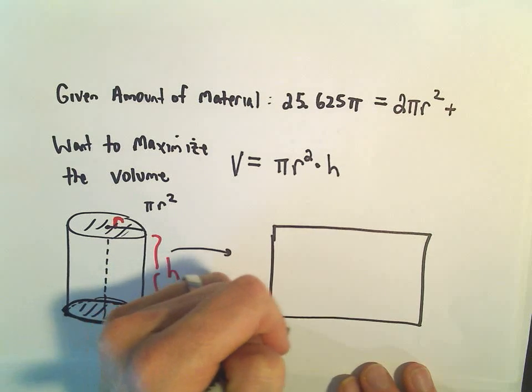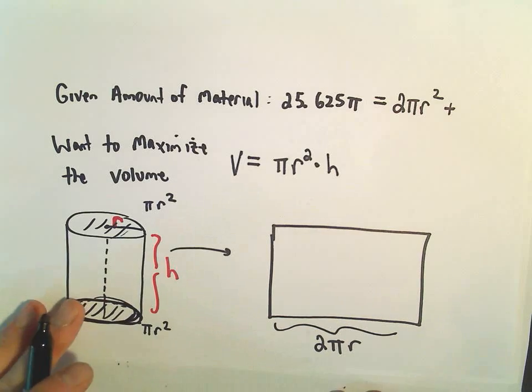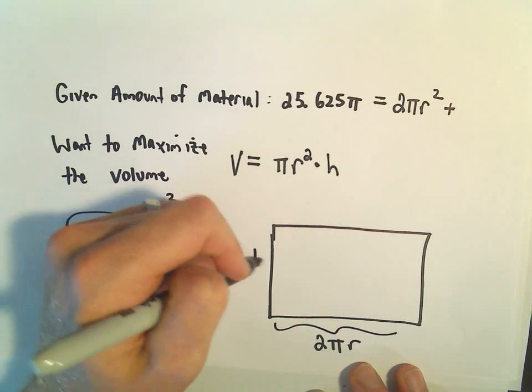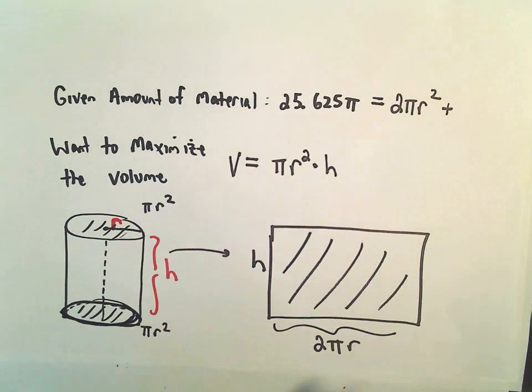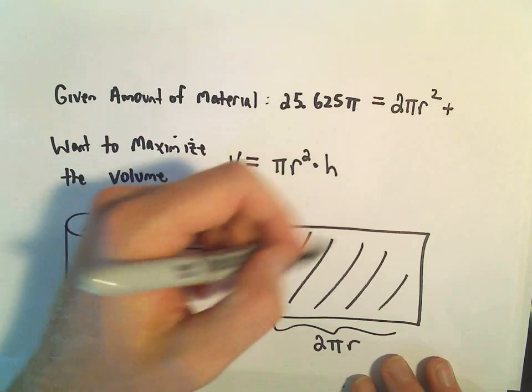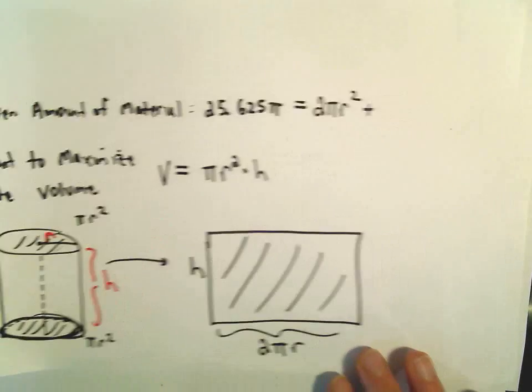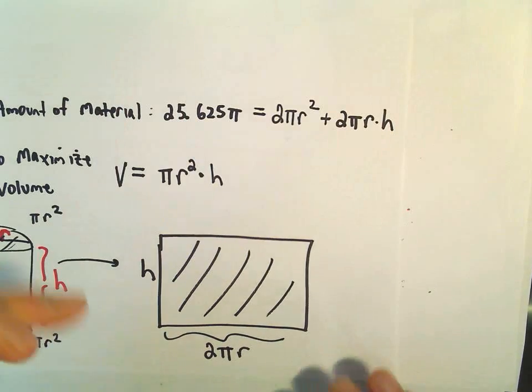And the height is still just H. So we've basically used 2πR times H worth of material to make the side of the can. So I'm going to put that in there as well, 2πRH.